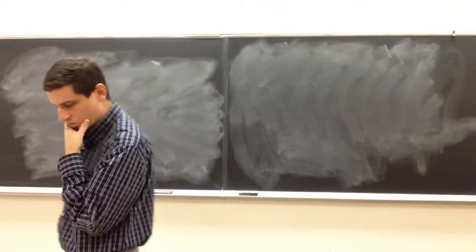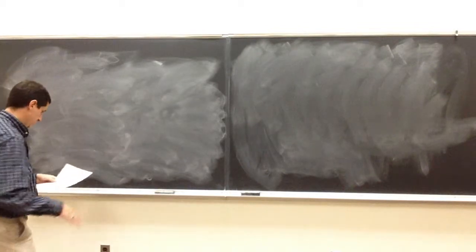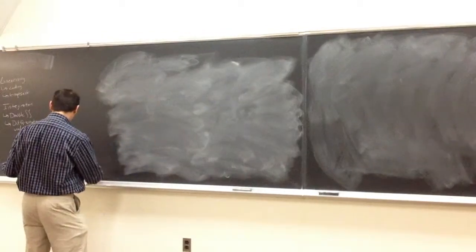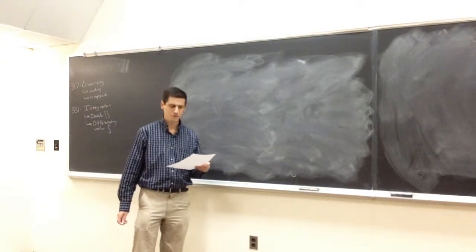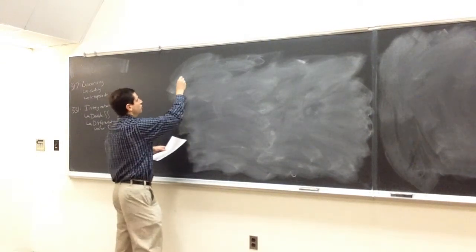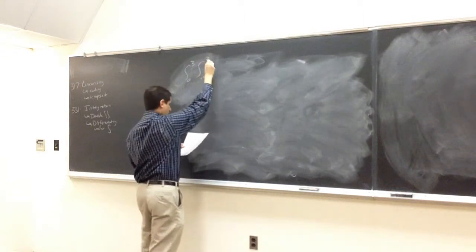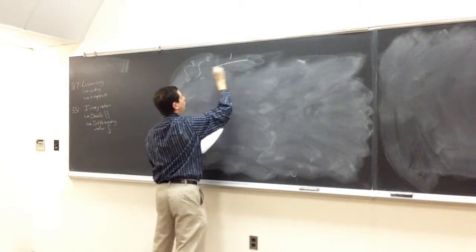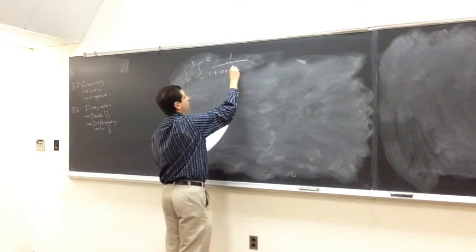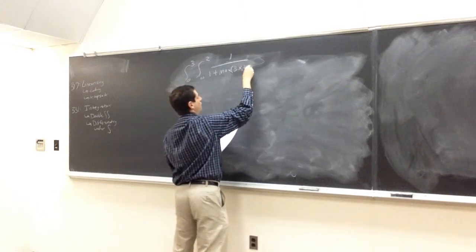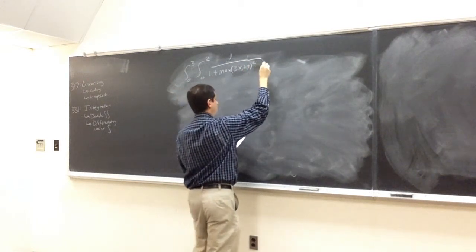Today we're going to do a little bit more on integration. I thought I would start off with a really nice integral from a couple of years ago — from one of the Virginia Tech problems. We want to look at the integral from 0 to 3, the integral from 0 to 2, of 1 over 1 plus the maximum of 3x, 2y, squared, dx dy.